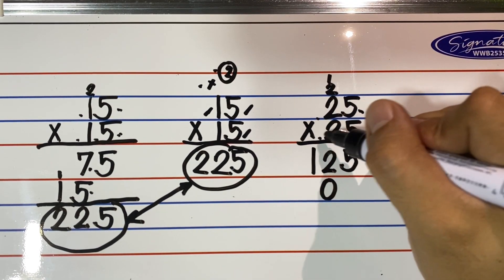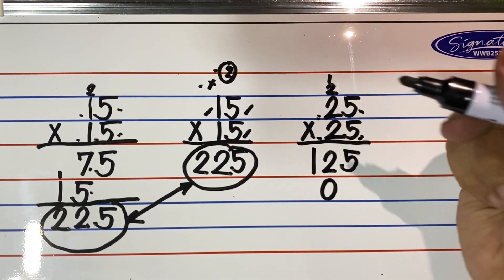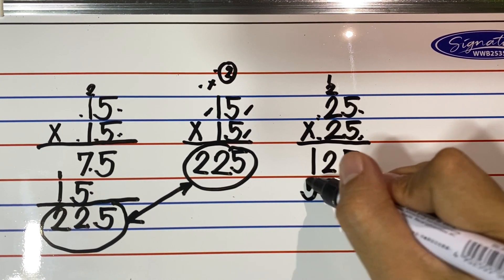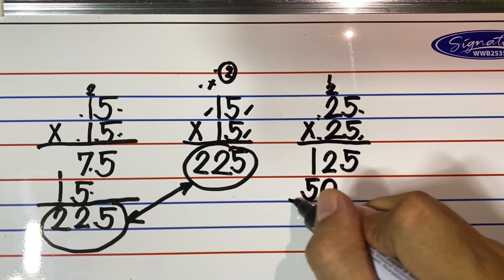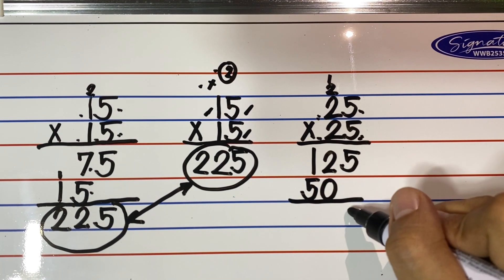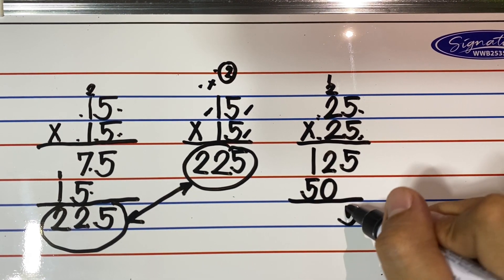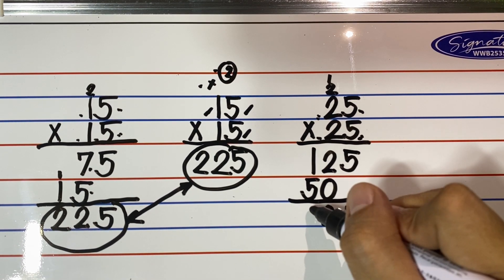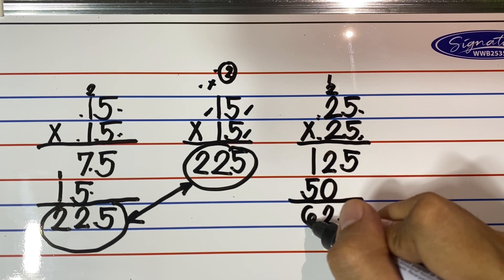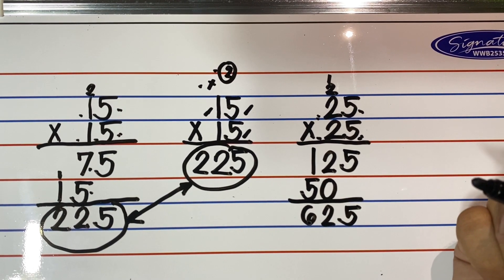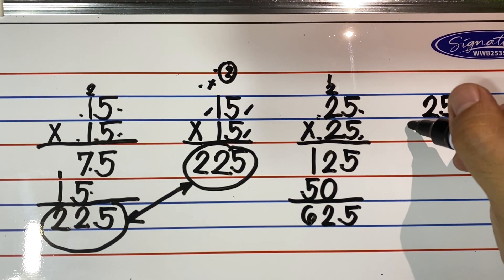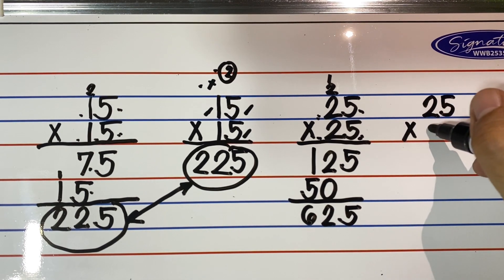For the next partial product: 2 times 5 is 10 — write 0 below the 2 of the first partial product, then carry 1. 2 times 2 is 4, plus 1 becomes 5. Then add both partial products: bring down 5, then 2 plus 0 is 2, 1 plus 5 equals 6. The final product is 625.